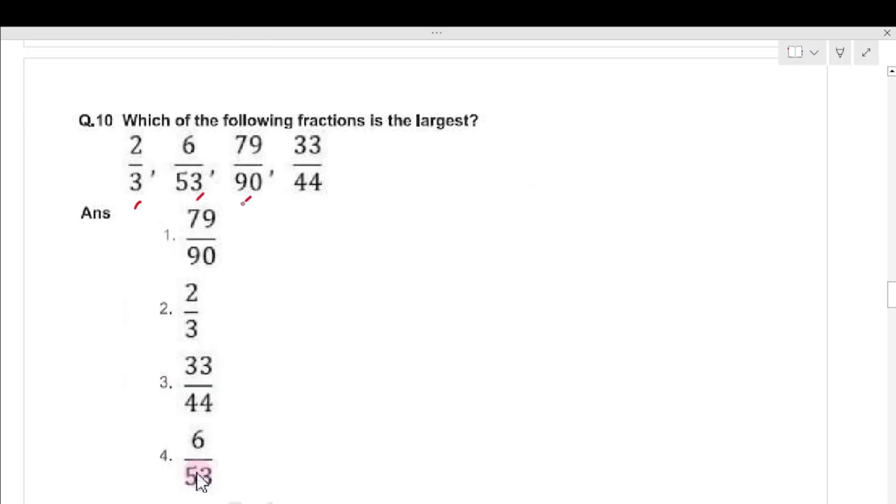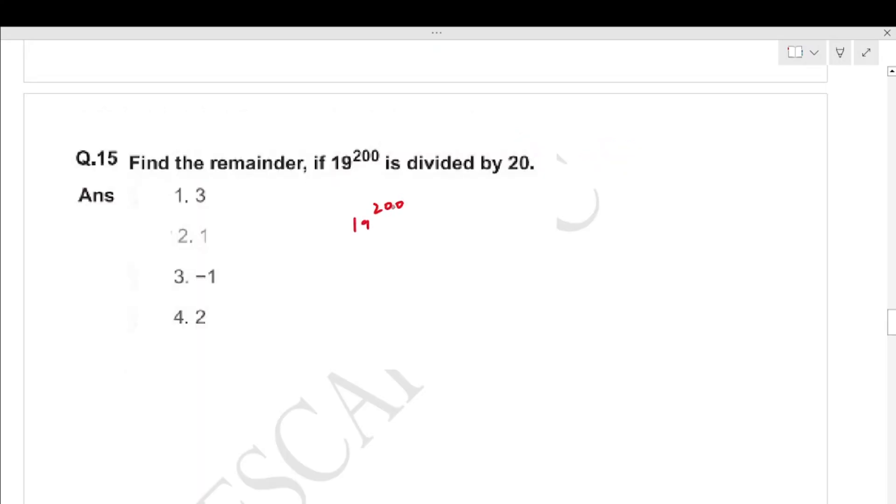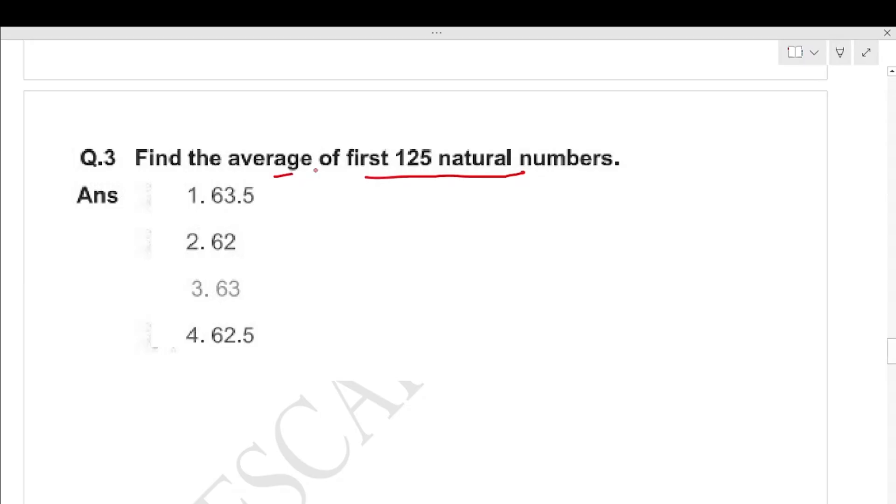Sixth question: 4 fractions, find the largest one. Try them: 2 by 3 is 0.67, 6 by 53 is... 79 by 90 is 0.88. 3 by 4 is 0.75. So 79 by 90 at 0.88 is largest. First option is correct. Question about 19 divided by 200, remainder is 1. So when divided by 24, remainder is 1 minus 1. Second option is correct.